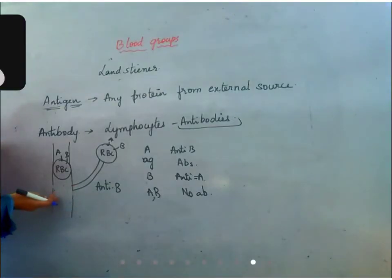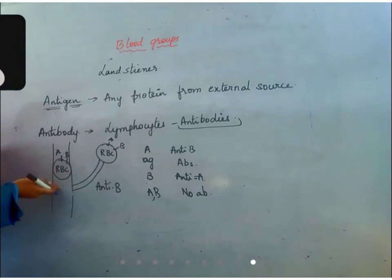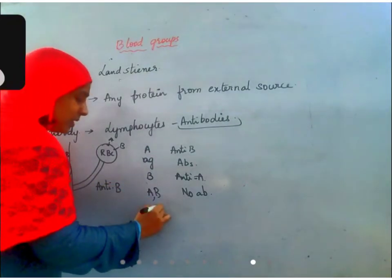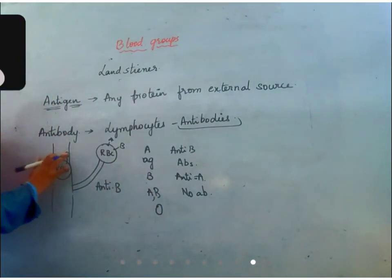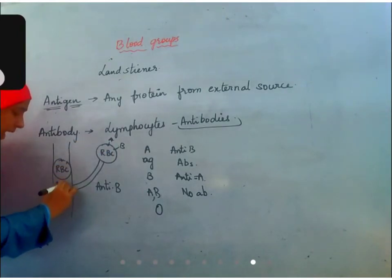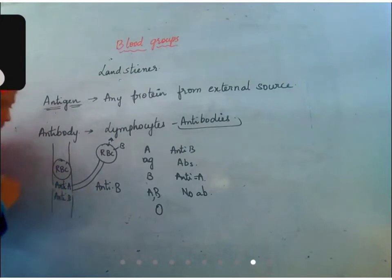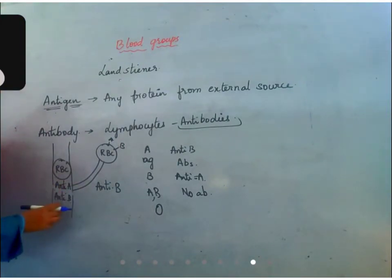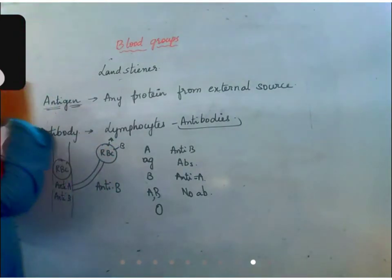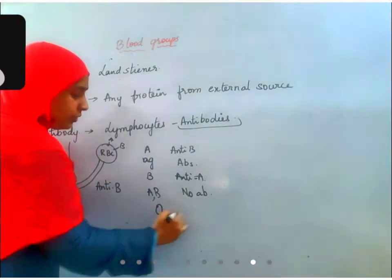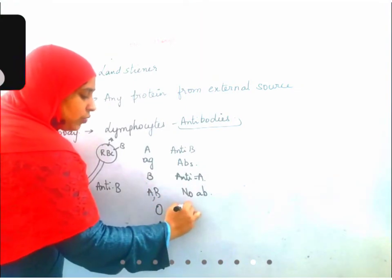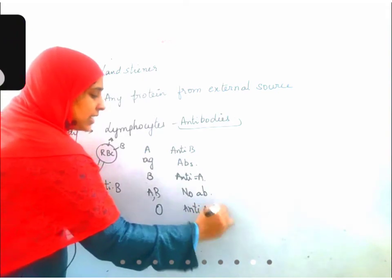When no antibodies are being produced, there is no harm. For O blood group, neither A nor B antigens are present, so the body will produce both anti-A and anti-B antibodies. That person can donate blood to everyone but cannot receive blood from A, B, or AB — only from O blood group. So for O blood group, you write anti-A and anti-B as antibodies.